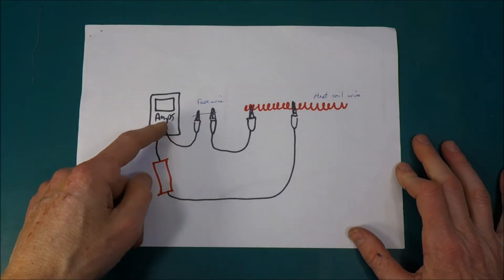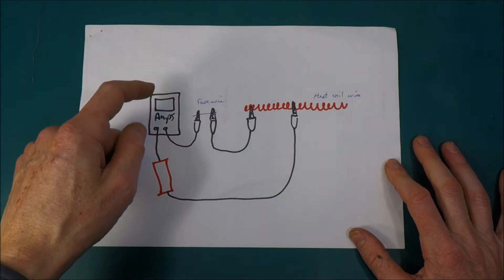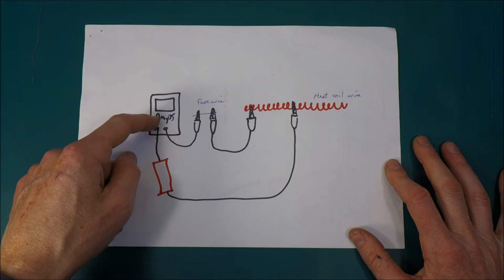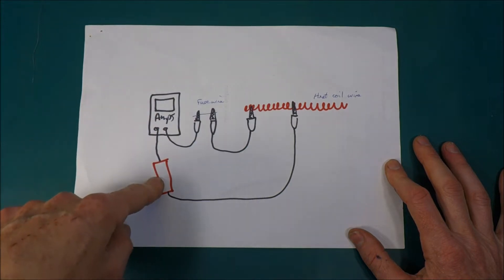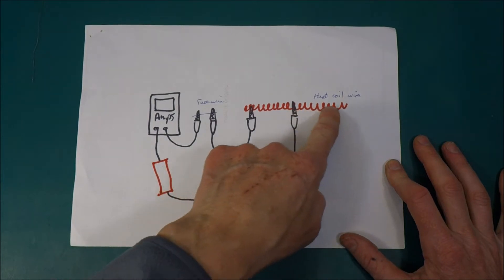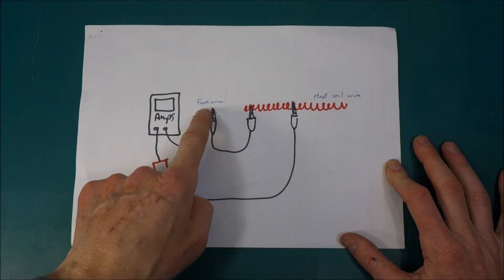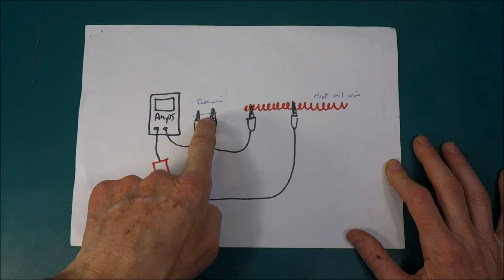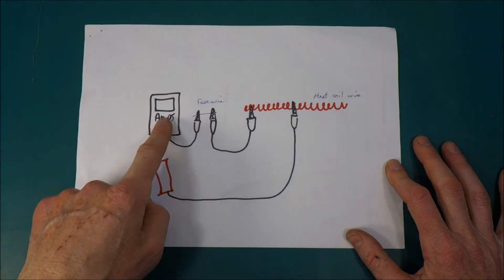And so we've got an equally simple circuit. We've got a multimeter set to current connected to an 18650 battery which connects to a piece of heating coil wire connected in series with the fuse wire you're testing. And that's it.